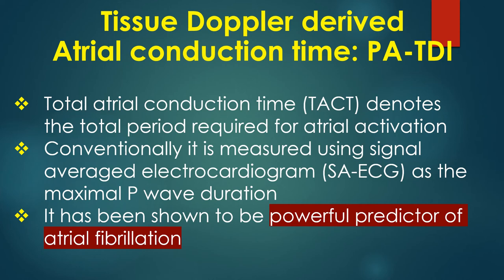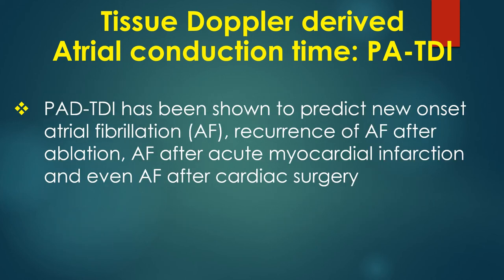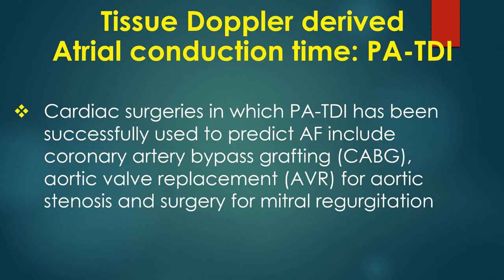Tissue Doppler-derived atrial conduction time: total atrial conduction time denotes the total period required for atrial activation. Conventionally, it is measured using signal-averaged electrocardiogram as the maximal P wave duration, and has been shown to be a powerful predictor of atrial fibrillation. A simpler method available in any echo lab uses tissue Doppler combined with surface ECG. PA-TDI is measured from the onset of the P wave on the surface ECG to the tissue Doppler-derived PA wave at the lateral left atrial wall. PA-TDI has been shown to predict new-onset atrial fibrillation and recurrence of AF after catheter ablation.